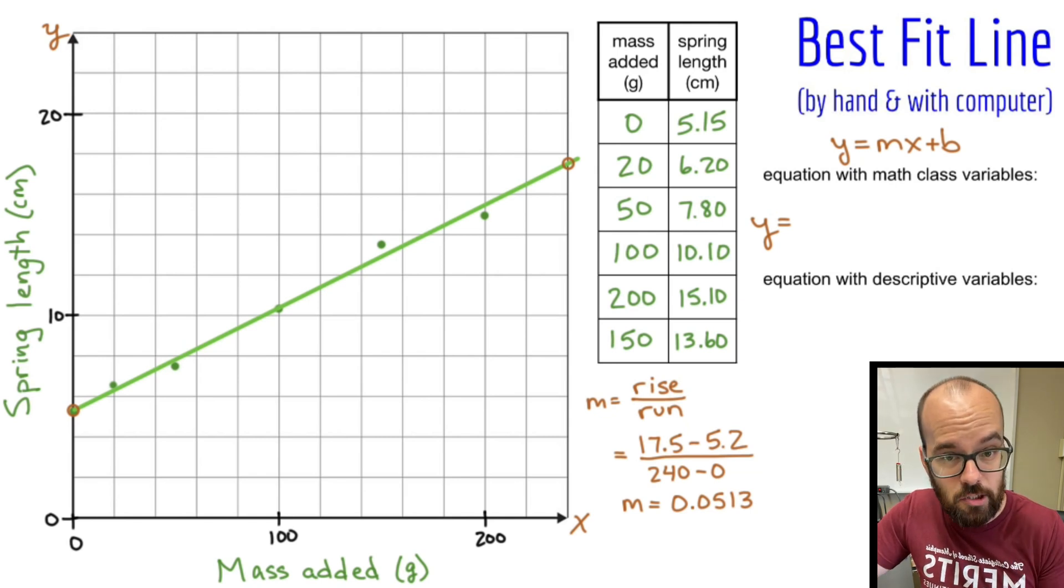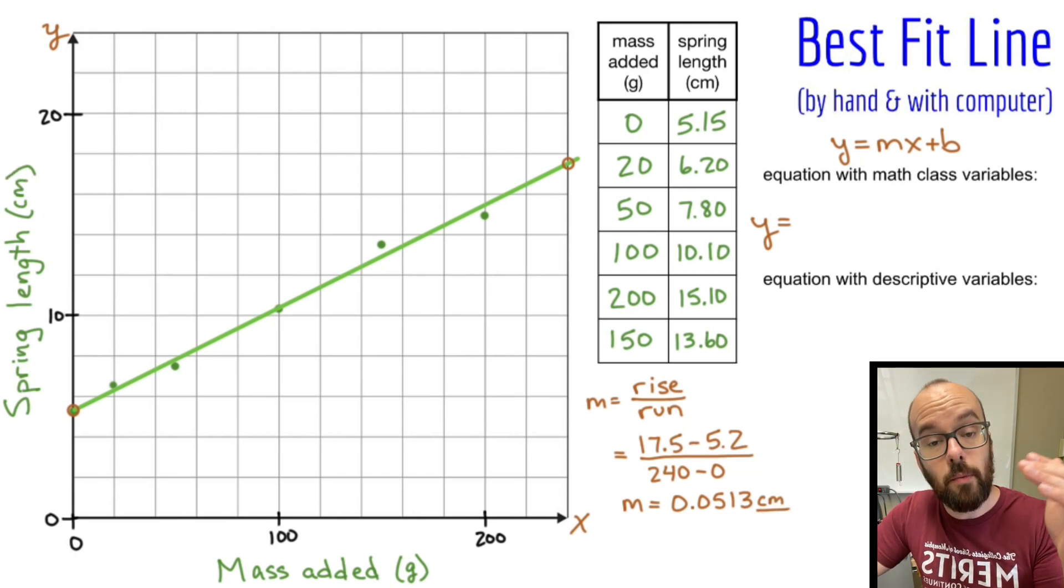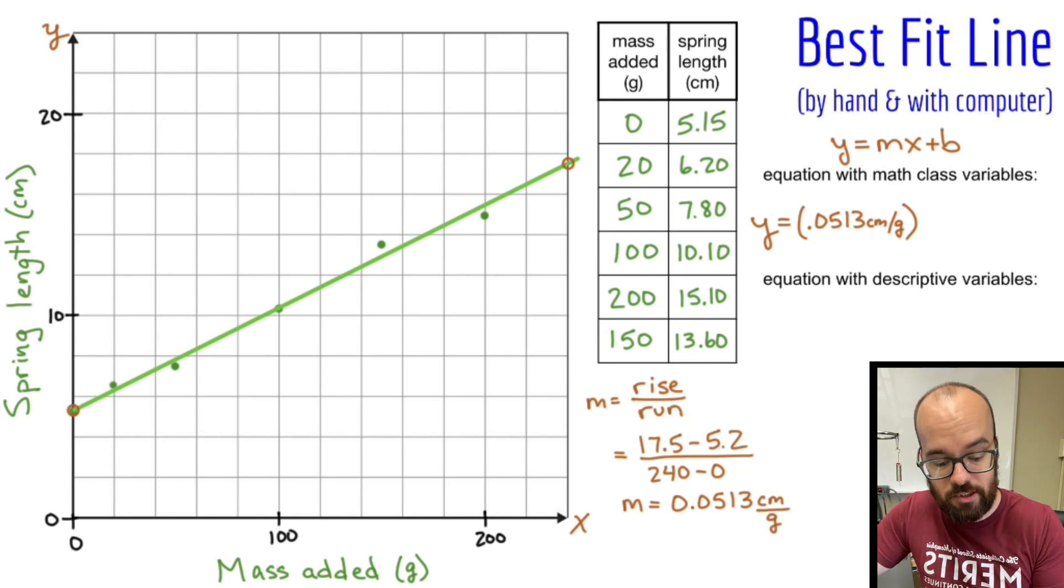Now that slope actually has units. So let's think about this. This was rise over run. What are the units of our rise on our graph? Our vertical axis is spring length. So the units of the rise, because we're changing along this axis, the units of the rise are centimeters. So it's going to be 0.0513 centimeters, but it wasn't just rise. It was rise over run. So it's centimeters over whatever my run units are. And run is a change horizontally. My horizontal axis is mass added, which is in grams. So it's going to be centimeters per gram. So I'm going to put that into my equation here. That's my slope.